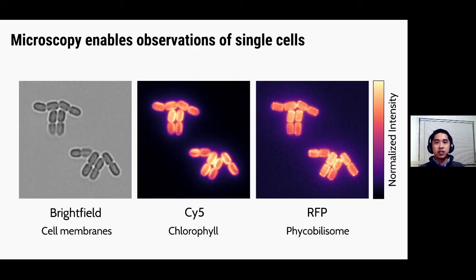So here are examples of images that we collect on the microscope. On the left is a brightfield image, which is basically formed by the light that is transmitted through the sample. And as I'll explain on the next slide, we use these brightfield images to identify cells in the image. This middle image here was collected using the Cy5 filter set, and this filter set has a long pass red emission filter, which basically lets through mainly chlorophyll fluorescence. Now finally, we will acquire images using the RFP filter set, which transmits mainly phycobilisome fluorescence.